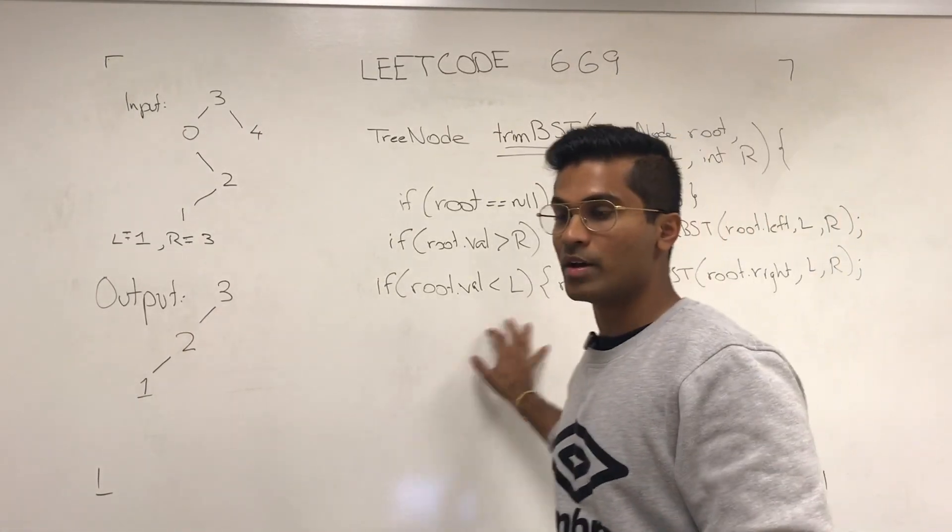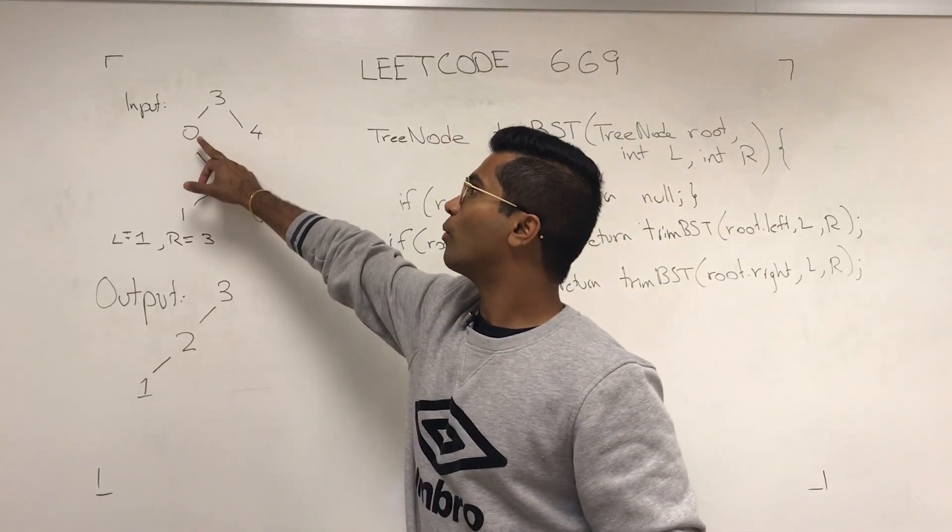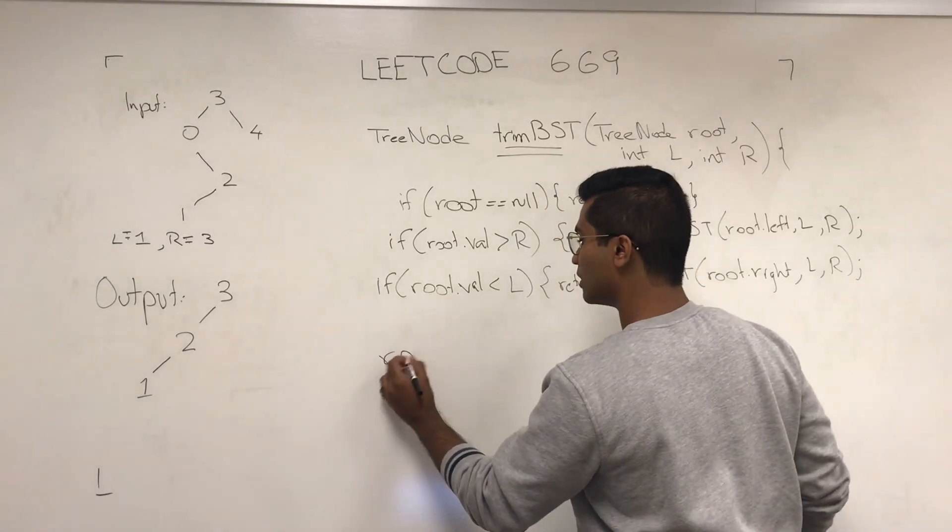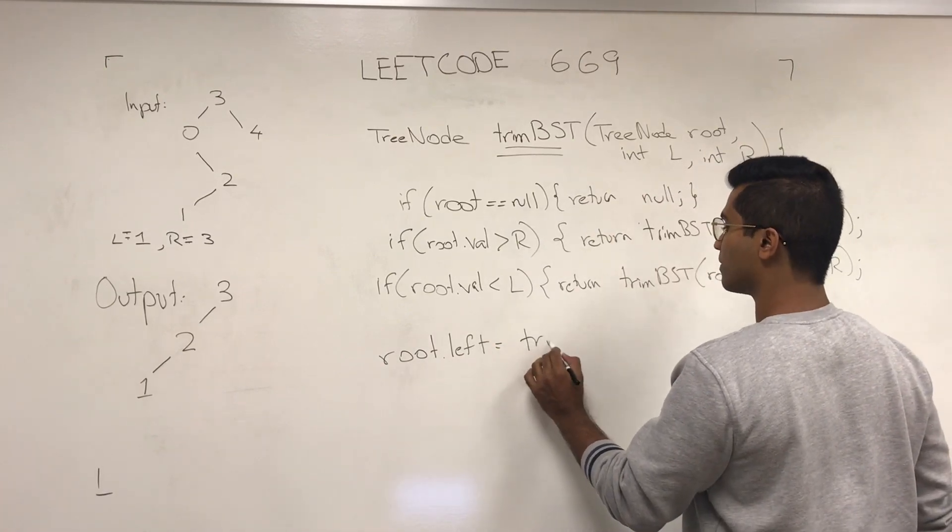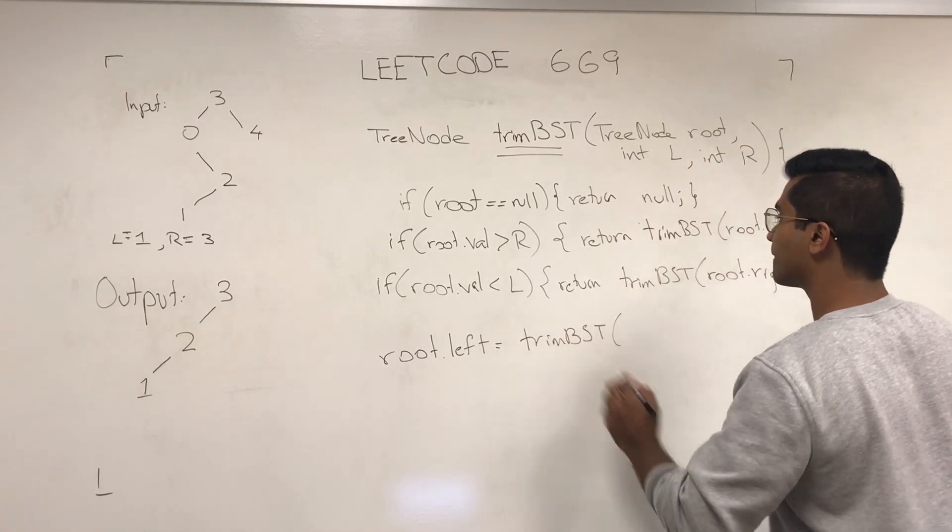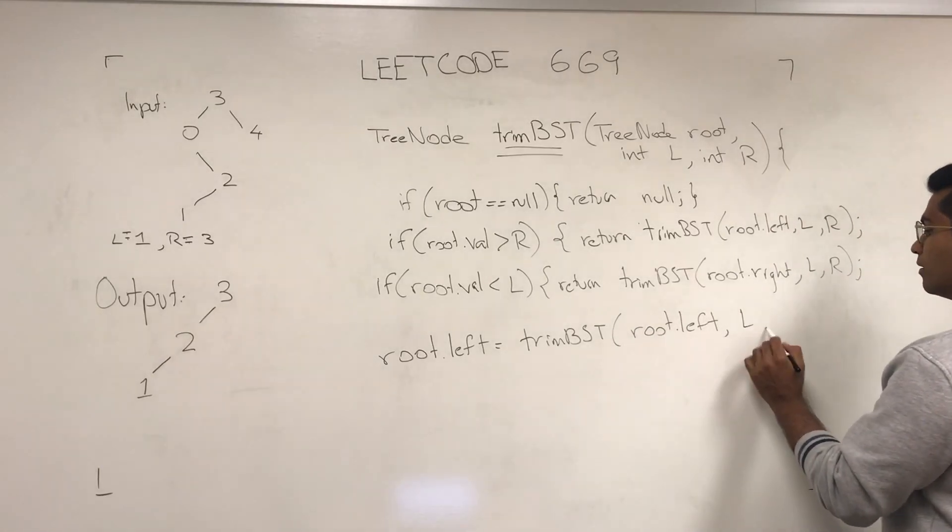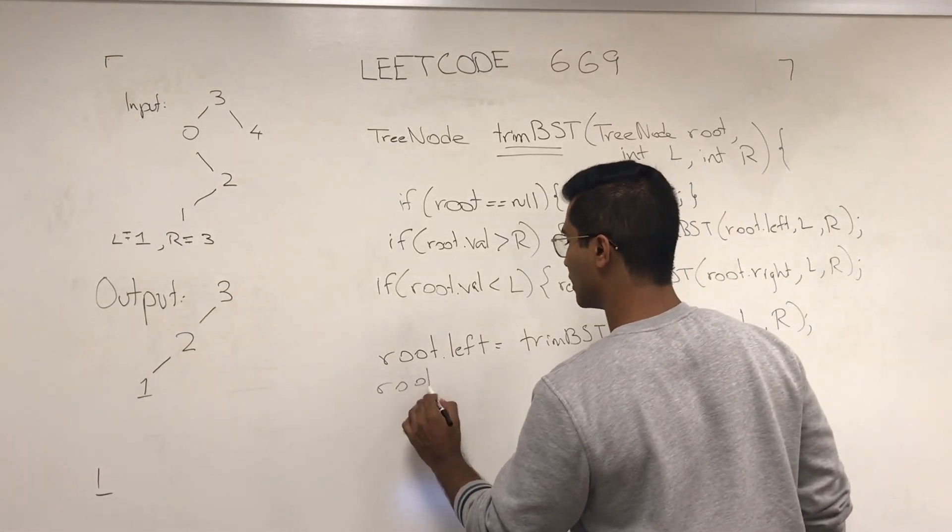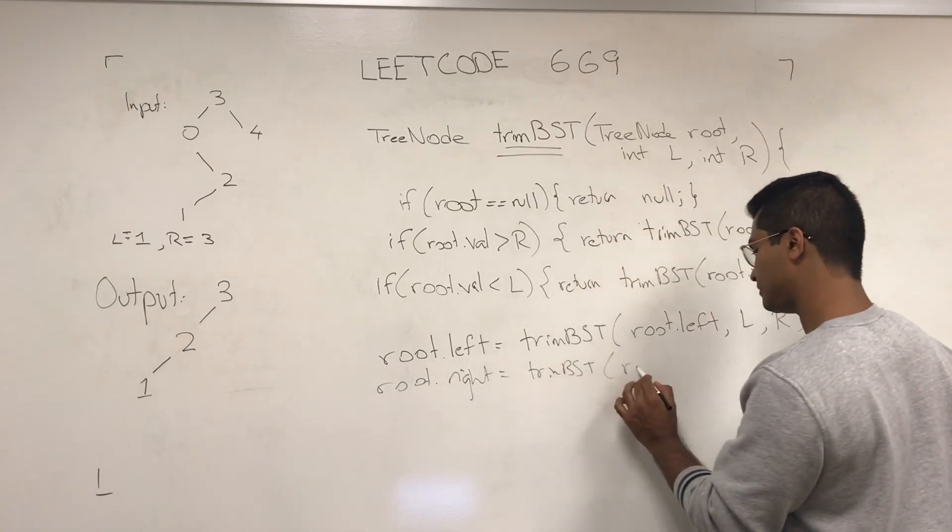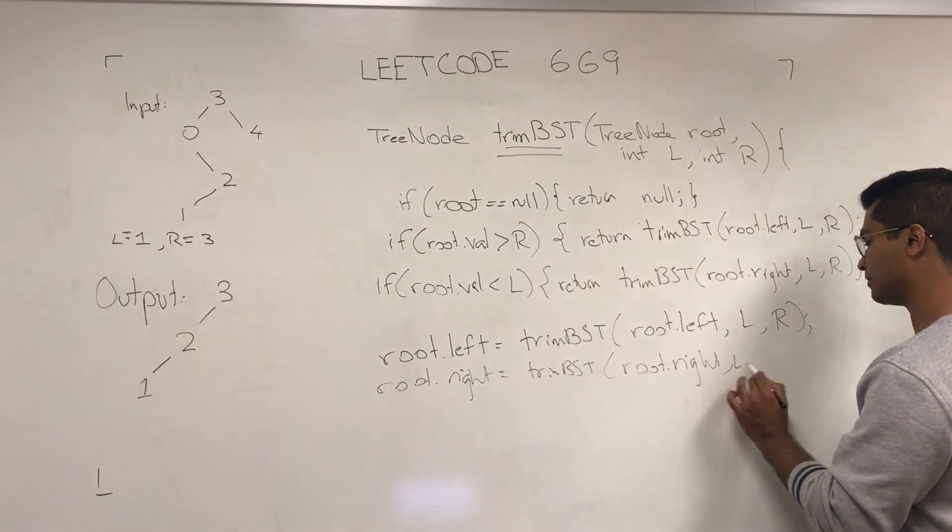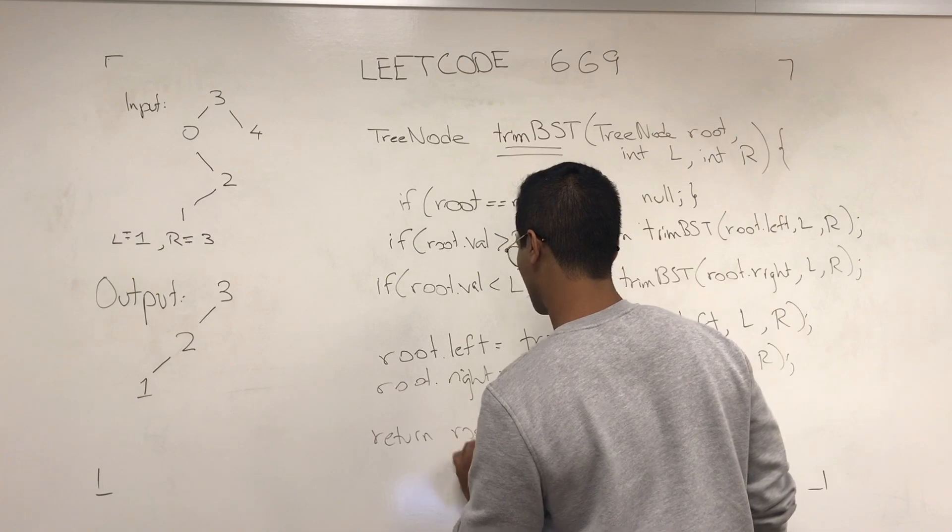Now, remember I mentioned, because of the recursion, three is going to figure out what it should put at its left. So, root dot left is going to be trim BST root dot left L and R, root dot right L comma R, and then we return root.